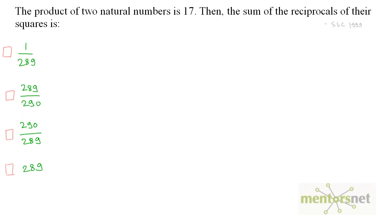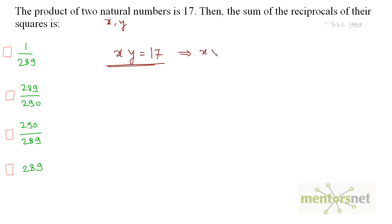The next question: the product of two natural numbers is 17. Then the sum of the reciprocals of their squares is what? Let us assume these two natural numbers are x and y. The product of x and y is 17, so x times y equals 1 times 17, meaning x equals 1 and y equals 17.